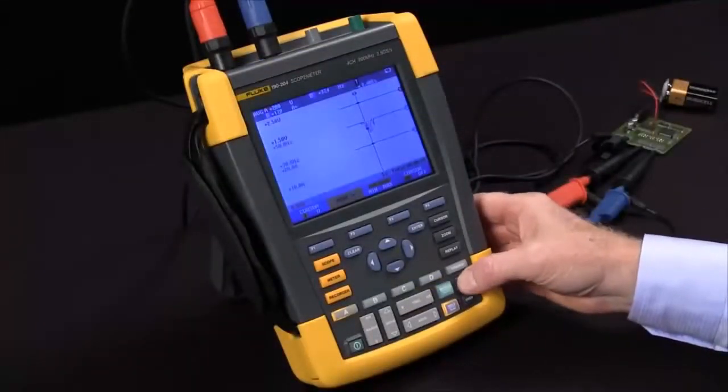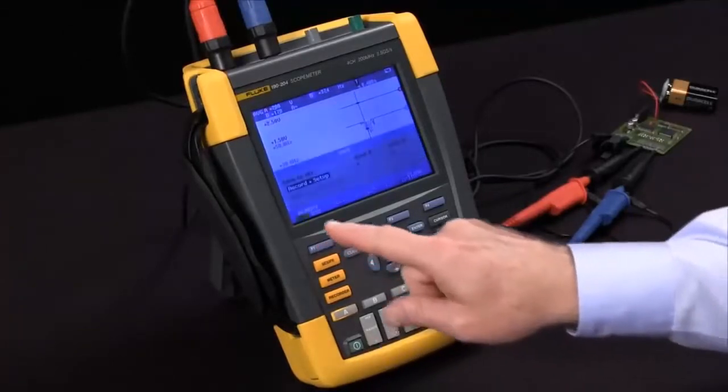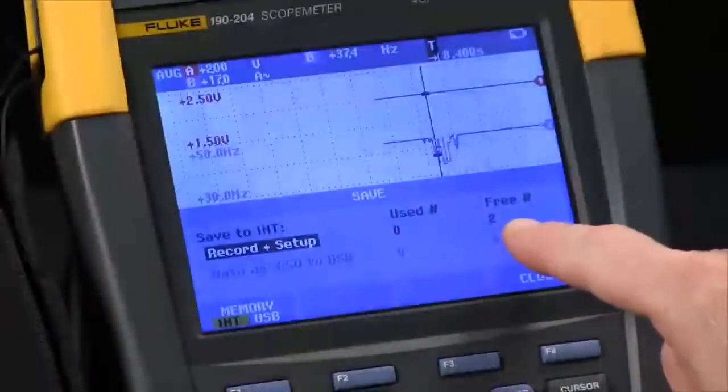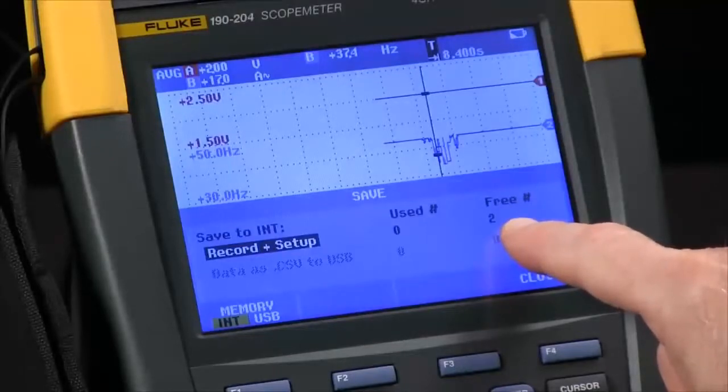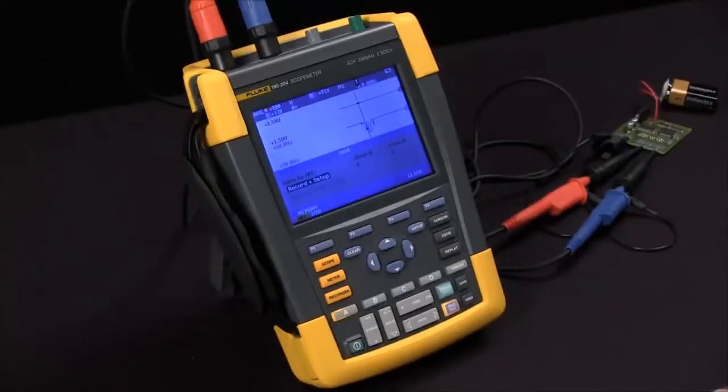If I want to save, I hit the save button, F1 to save, and I can record and save up to two recordings and setups for trend plot. And that's how you use the ScopeMeter trend plot function.